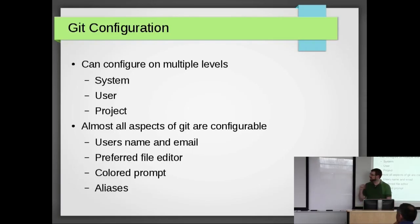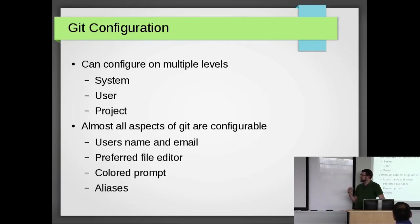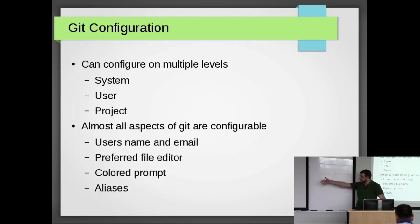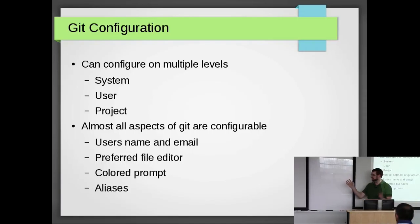Almost all aspects are configurable. You're going to use external programs to edit your code and do things like git commit. You can use any command line editor or not — you can set that up all in the preferences. Color prompts, aliases — I know some people that go crazy with aliases where they just have 'gc' as git commit, so they can just type that instead of 'git commit'.